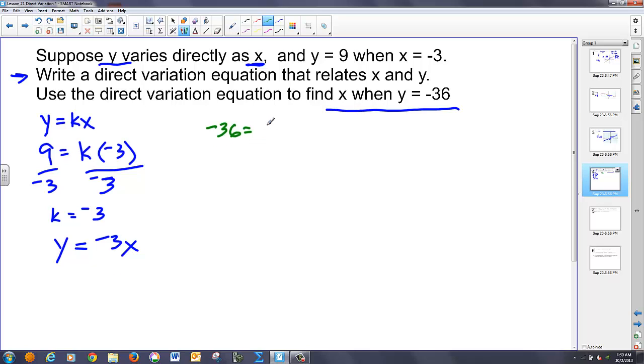Well, the only difference between this part of the problem and the initial is I didn't have k before, and now I do have k. So I have negative 36 is equal to negative three because that's my k value, once again, times x. And then I can simply divide by negative three to both sides. And I end up with positive 12 is equal to my x value.